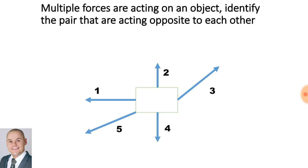There are multiple forces acting on this object. Identify the pair that are acting opposite to each other. I would say vector 2 and 4 are opposing each other.